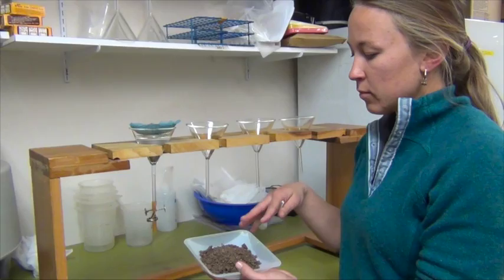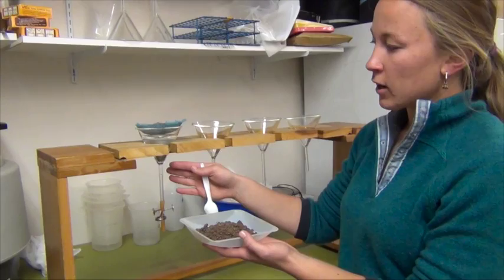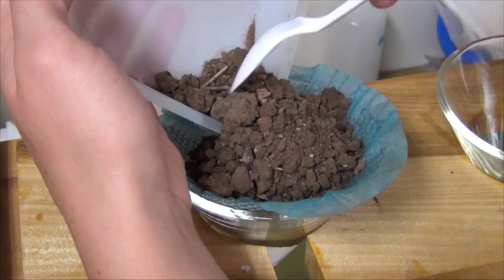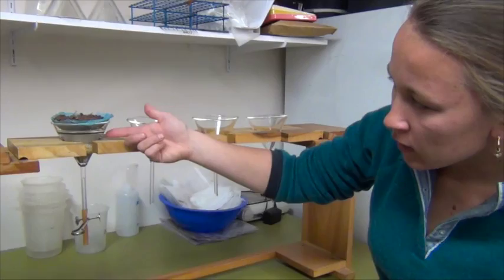The Baermann funnel method is used for soil nematodes, where a pre-weighed amount of soil is placed on a filter paper on top of a screen on a funnel. The nematodes from the soil will then swim down into the water in the funnel. The Baermann funnel method takes advantage of the aquatic nature of nematodes. Dry soil is placed on top of a water surface, which attracts the nematodes. They swim out of the soil, down into the water, and can then be collected.